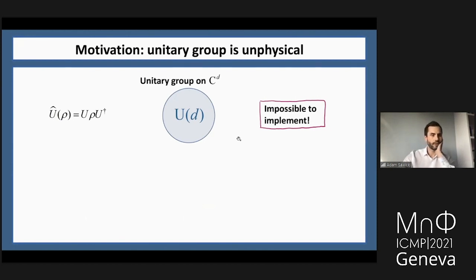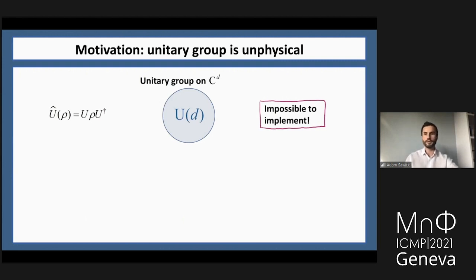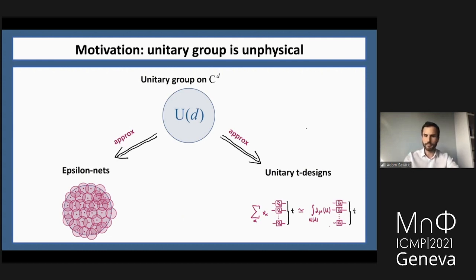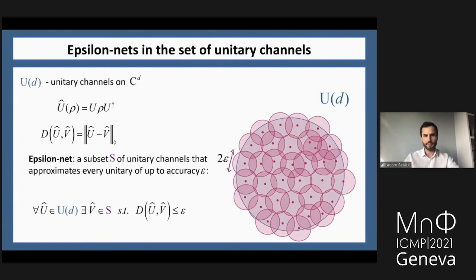The motivation is that the unitary group is unphysical — it's impossible to implement all its elements because there is a continuum of them. There are two notions of approximating the unitary group: Epsilon Nets and unitary designs. This talk is about the connection between those two notions.